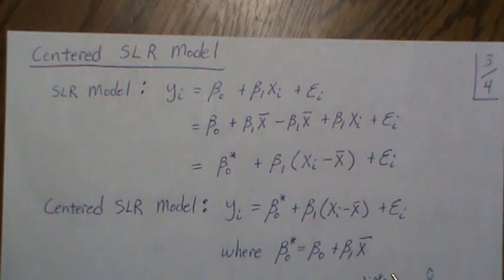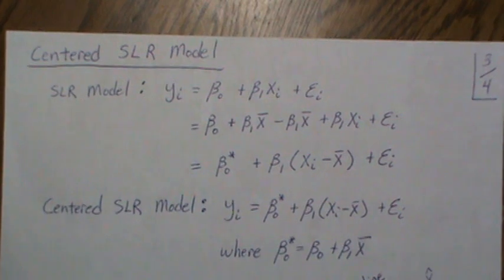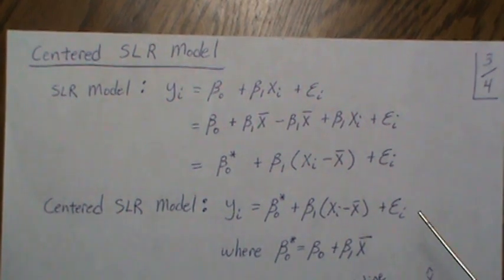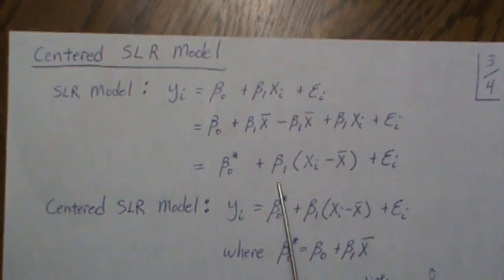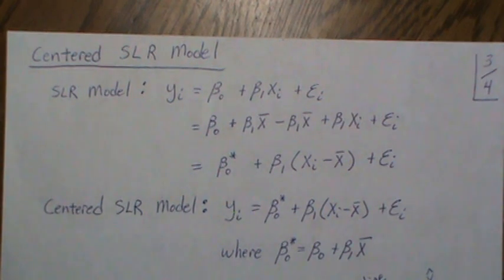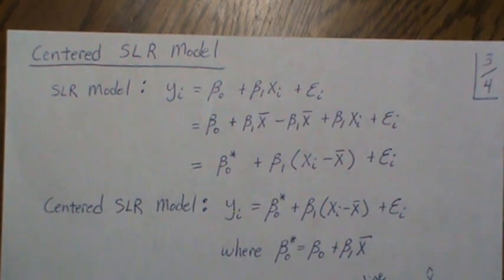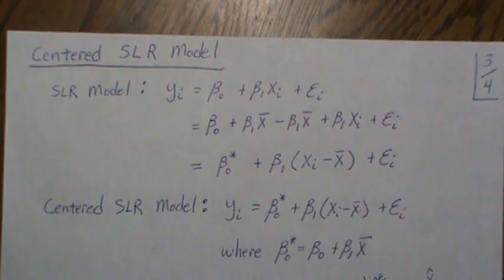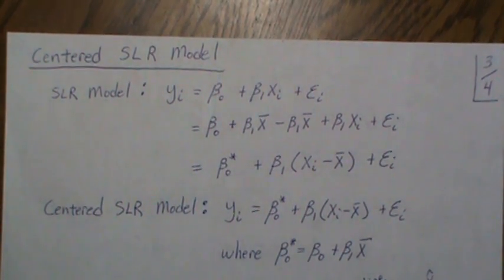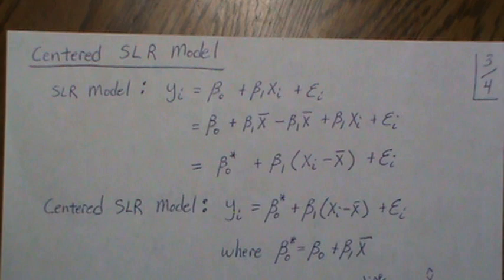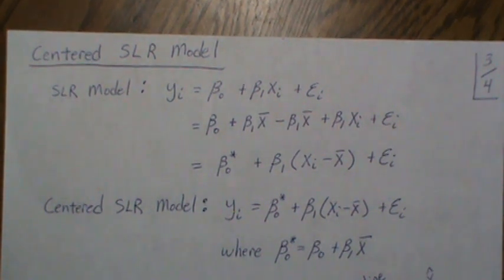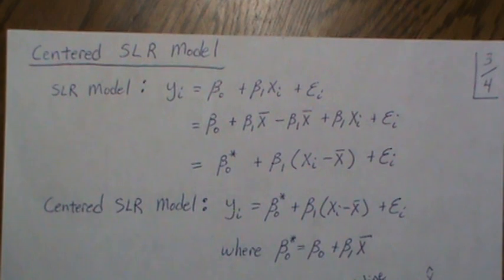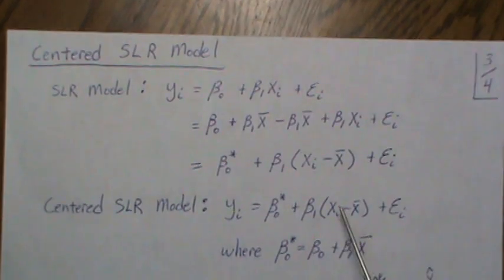Why center a model? One reason is it makes mathematical derivations easier — the two models are technically equivalent. Another reason comes up with multicollinearity, which deals with correlations among multiple predictors. It can also help when working with interaction terms. Otherwise, centering is not usually necessary.